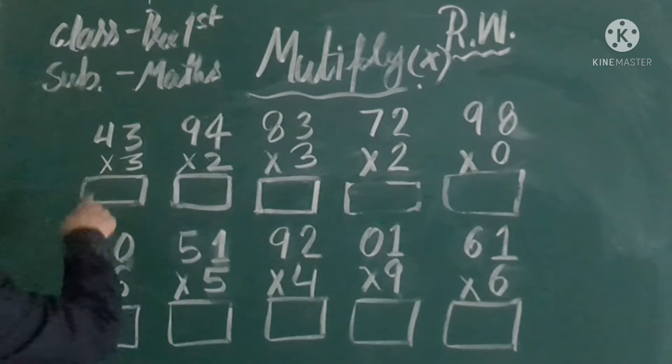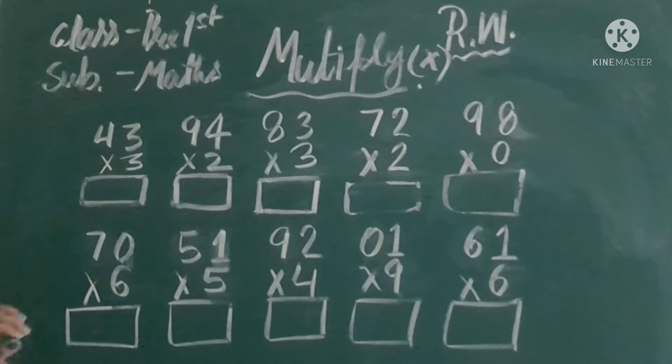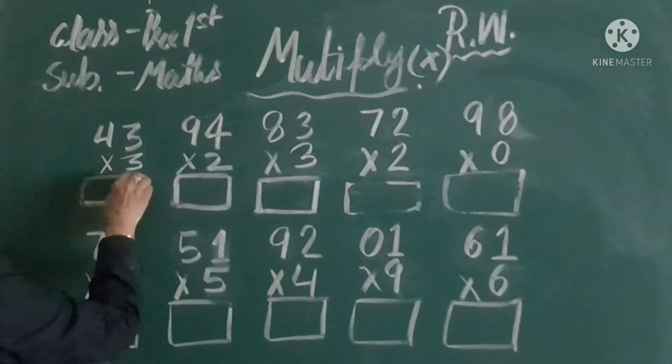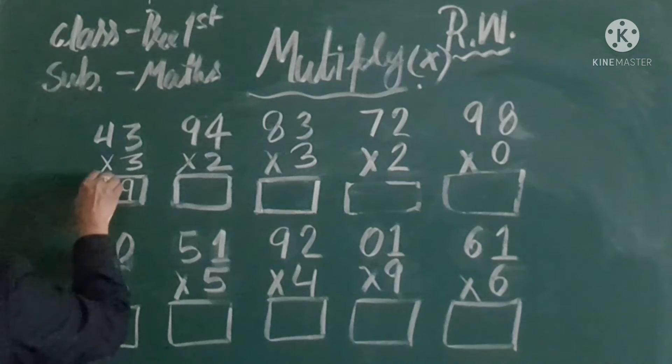It is sign of multiplied by, we say it. Okay? 3, 3's are 9. What is 3 is multiplied by 3? 3, 3's are 9 and 3, 4's are 12.